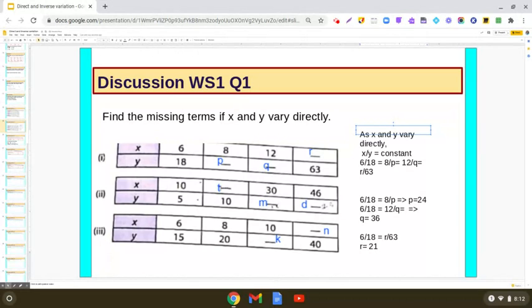So similarly, you can do the second and the third part. So in the second part, you will be making the relationship. 10 upon 5 is equal to t upon 10 is equal to 30 upon m is equal to 46 upon d. And get specific equations for finding the values of t, m and d.